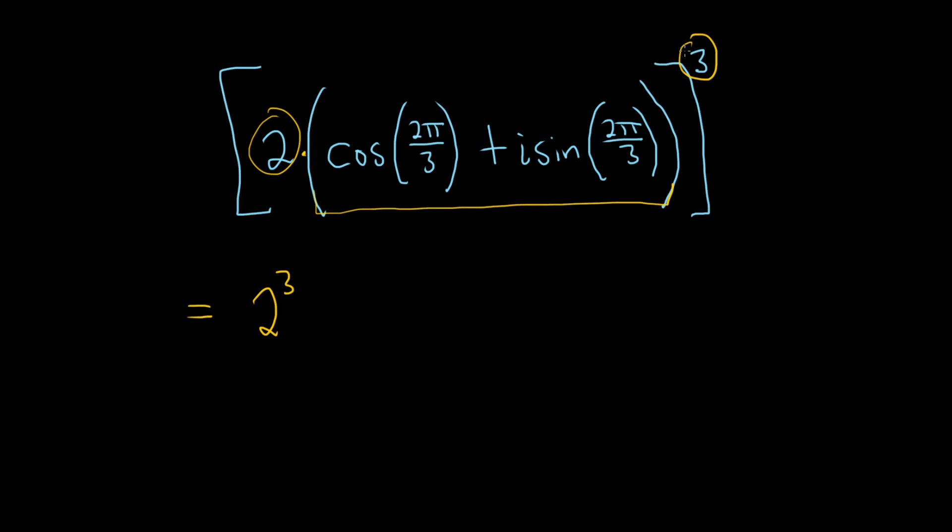And when you do that, you basically take the 3 and you multiply it by the angle. So this will become parentheses cosine of 3 times 2 pi over 3 plus i sine of 3 times 2 pi over 3.